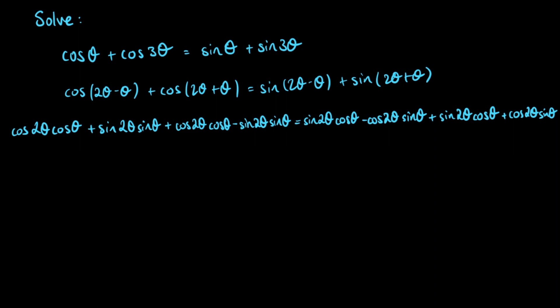Here we have a sine of 2θ·sinθ and a subtract sine of 2θ·sinθ — they are going to cancel out. And on the right-hand side we have a negative cosine of 2θ·sinθ and a positive cosine of 2θ·sinθ, and they are going to cancel out. So what are we left with?